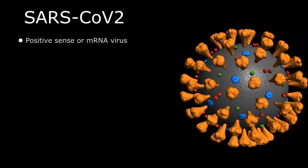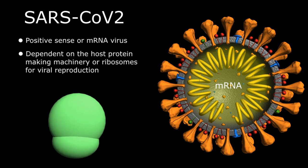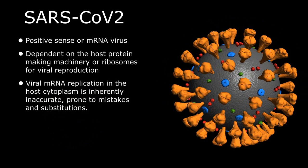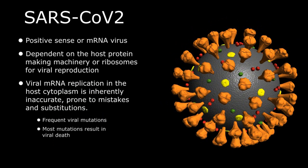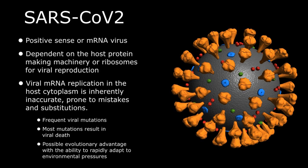SARS-CoV-2 is a positive sense or messenger RNA virus and, like all viruses, is dependent on the protein-making machinery or ribosomes in the cytoplasm of the host cell. The process of reproducing the viral genetic code in the host cytoplasm is highly inaccurate and therefore prone to mistakes and substitutions resulting in viral mutations, most of which will result in viral death, but may also provide a Darwinian advantage with the ability of the virus to rapidly adapt to environmental pressures and ensure its survival.